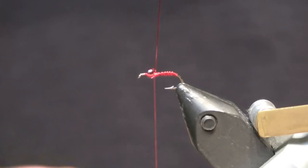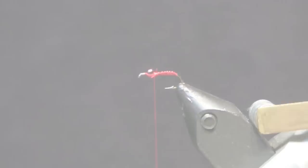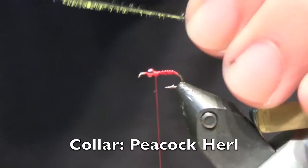Clip off the excess and we're ready for the peacock hurl. After you're done with the wire, you're going to be adding one strand of peacock hurl just behind the bead.